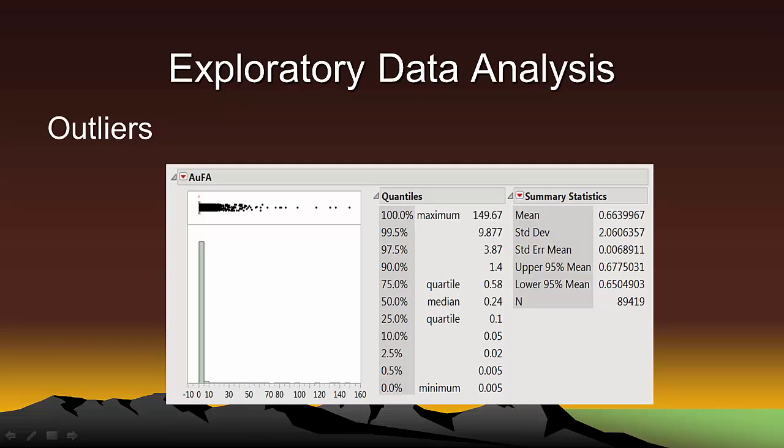So from the list of quantiles, we see that the 97.5th percentile is 3.87. So in other words, 2.5% of the blast hole grades have a grade of 3.87 grams per ton or larger. These are outliers. I call them outliers because although they only constitute 2.5% of the total data, they will likely create so much noise in the sample variogram calculations that the final variogram model will likely be a poor model of the spatial continuity of the remaining 97.5% of the data.